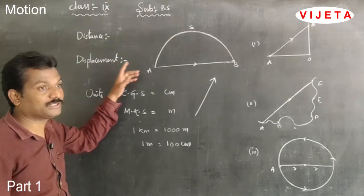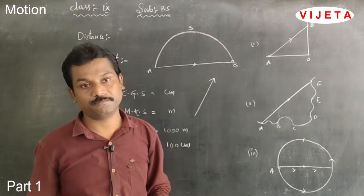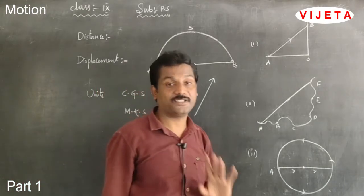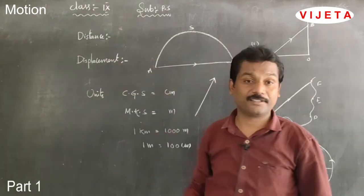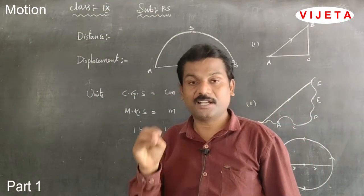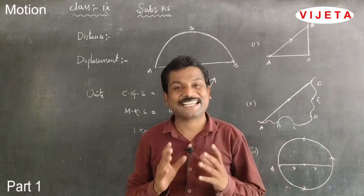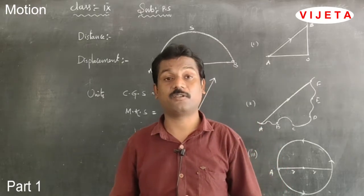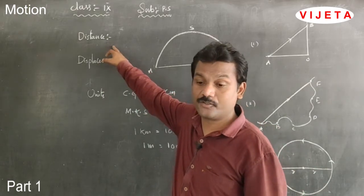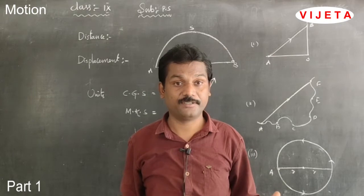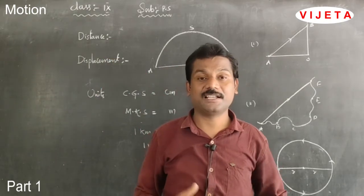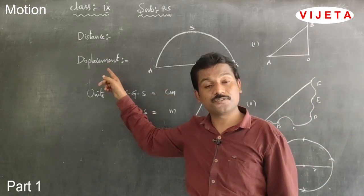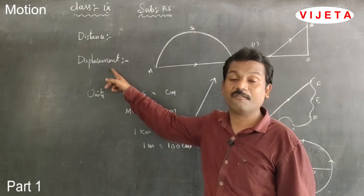Distance and displacement both give information about the covering of a path, but distance does not give information about direction, whereas displacement gives direction. A physical quantity having only magnitude is called a scalar quantity. A physical quantity having both magnitude and direction is called a vector quantity. Distance has only magnitude and no direction — that is why distance is a scalar quantity. Displacement has both magnitude and direction — that is why displacement is a vector quantity.